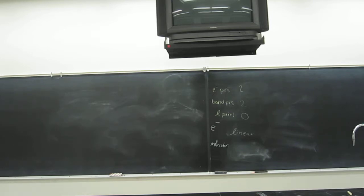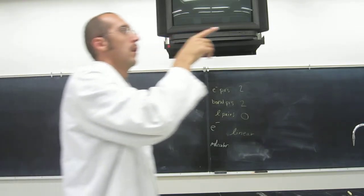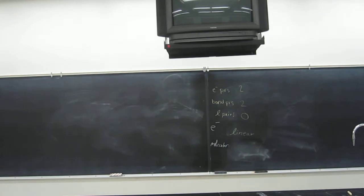So remember, this is going down the periodic table and then back up. Carbon had four bonding pairs, so four electron pairs, four bonding pairs, no lone pairs, right? And nitrogen had four electron pairs - three bonding pairs and one lone pair.